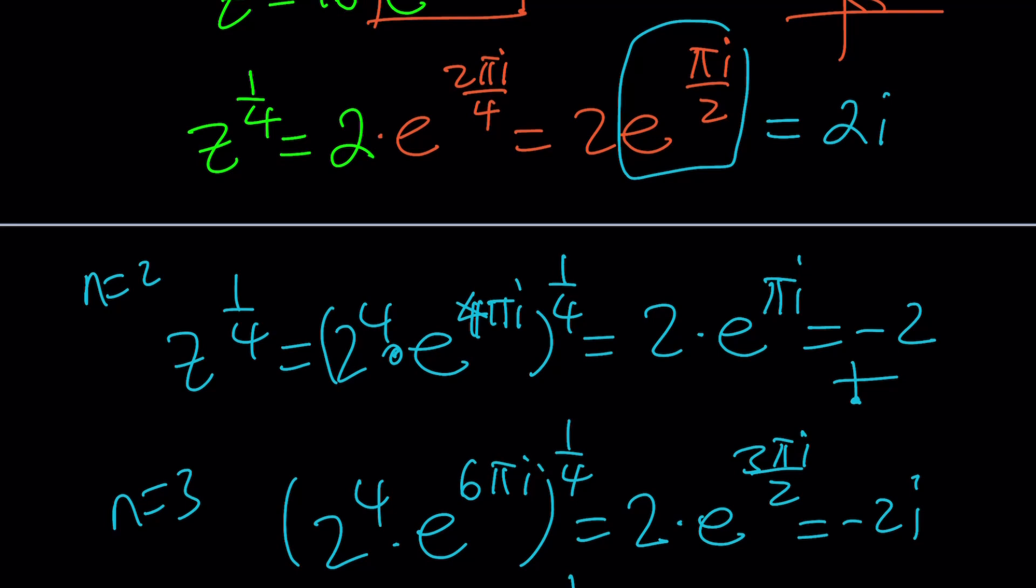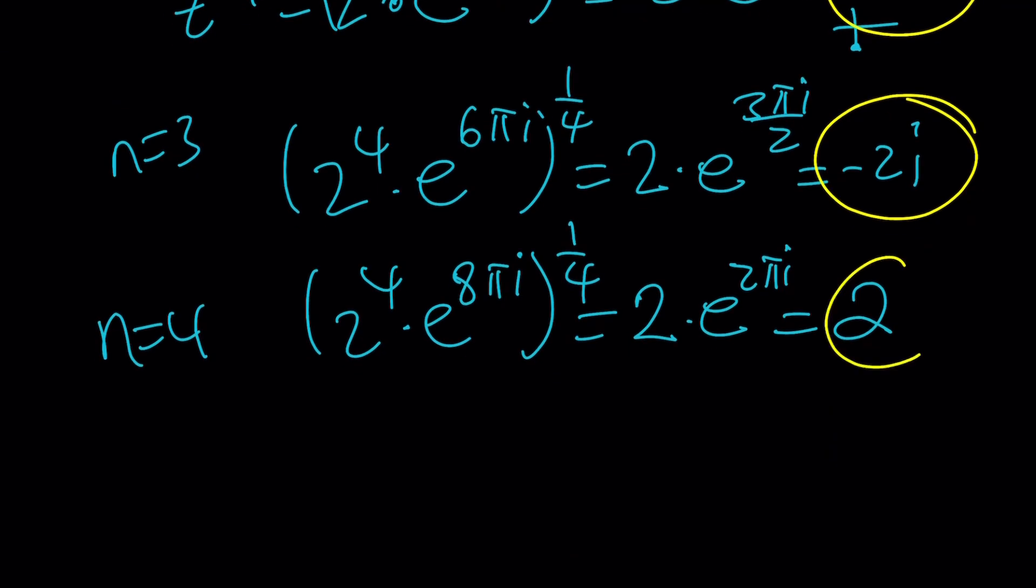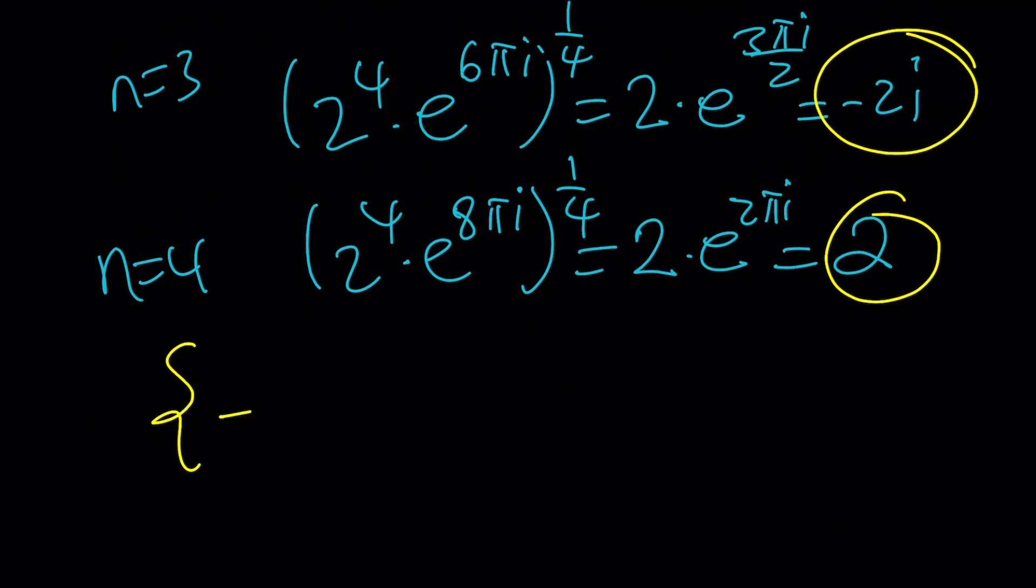As you can see here, we've got 2i, negative 2, negative 2i, and positive 2 as the set of all solutions. So we can pretty much write these as negative 2i, negative 2i, positive 2i, negative 2, and positive 2 as the solutions.